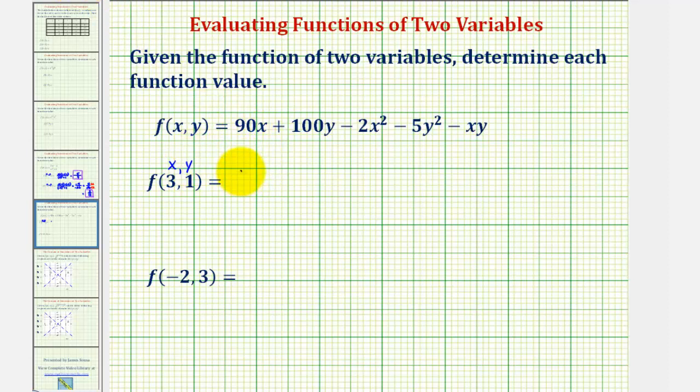So for 90x, we'd have 90 times three, plus 100y would be 100 times one, minus two times x squared, that would be two times three squared, minus five times y squared would be five times one squared, and then minus x times y would be minus three times one.